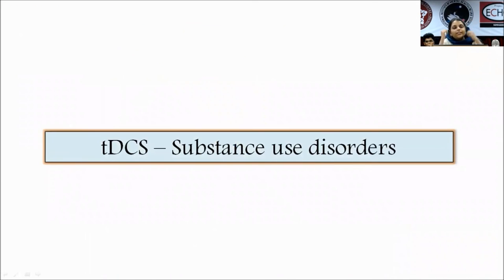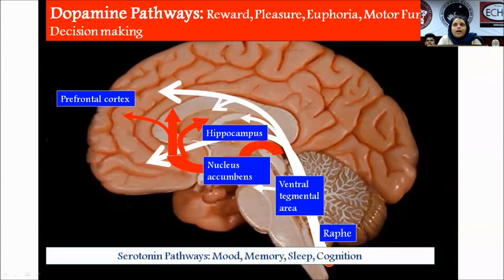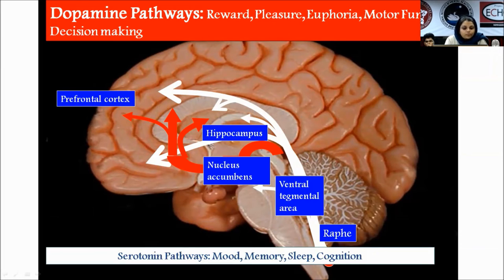Coming to tDCS in substance use disorders: the dopamine pathway is mainly involved in reward, pleasure, euphoria, decision making, and motor function, while the serotonin pathway modulates mood, memory, sleep, and cognition. Key structures include the prefrontal cortex, hippocampus, nucleus accumbens, ventral tegmental area, and raphe nucleus. White represents the serotonin pathway and red represents the dopamine pathway.